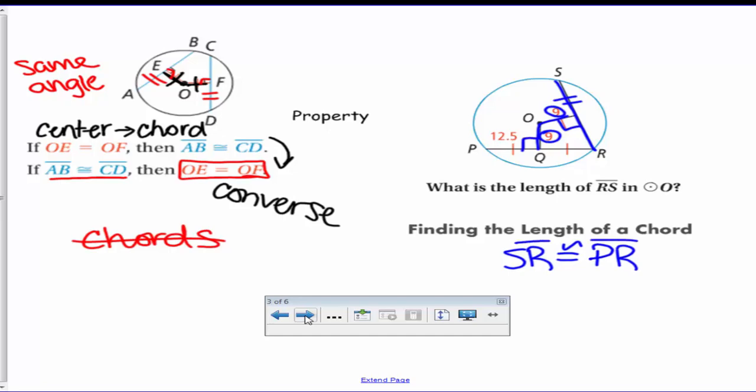So now looking, we have 12.5 is from P to Q. Those lines there means that's 12.5, so if you add it up, PR equals 25. Therefore, RS equals 25. That is the length of that chord.